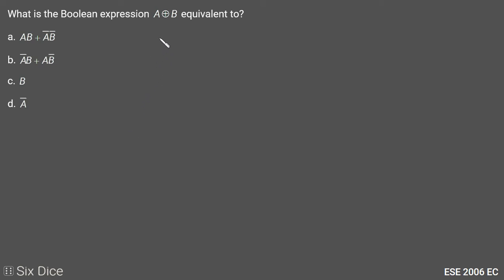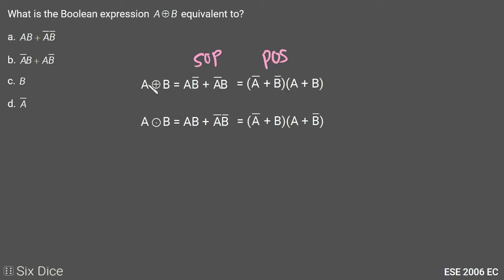In this question we need to find the equivalent of A XOR B. A XOR B in SOP form will be A·B̄ + Ā·B, and in POS form it will be written as (Ā + B̄) in one bracket and (A + B) in the second bracket.